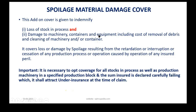The sum insured must be stock in process plus plant and machinery, because this extension also covers the cost of removal of debris. Spoilage is payable when stocks are spoiled resulting from retardation, interruption, or cessation of any production process. It is not only stoppage — retardation means the rate of chemical reaction has slowed down, or the process is interrupted or ceased. All three scenarios leading to spoilage of the chemical will be paid under this add-on cover.